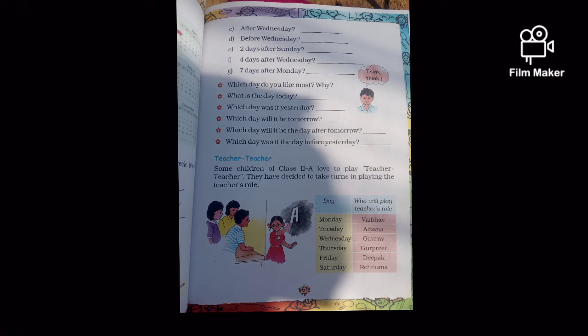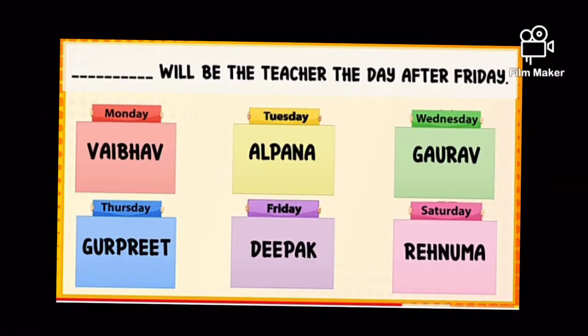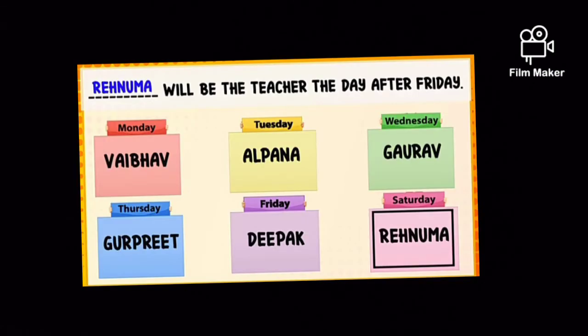According to this chart, we will answer these questions. Now fill in the blanks. First question: dash will be the teacher the day after Friday. Which day comes after Friday? Saturday — so Rahenuma will be the teacher the day after Friday.